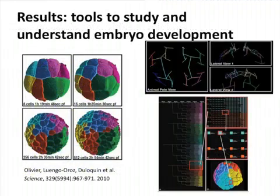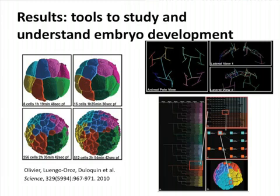As for results, we provide a set of tools and methods which allow us to reconstruct — published for the first time in a Science paper two years ago — the full lineage tree of a zebrafish embryo from the first cell through cell number 1,000. We have all the coordinates and shapes of all the cells in the embryo, and we can identify which underlying processes, organized in time and space, make the embryo.